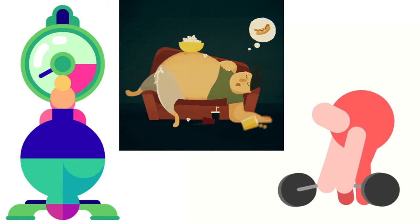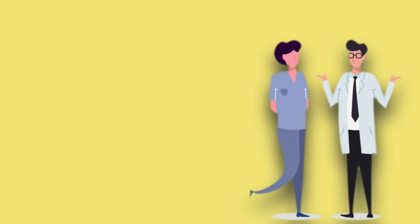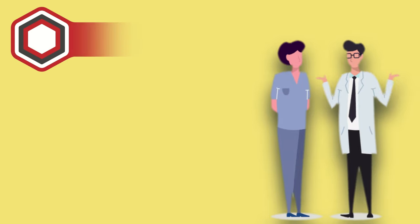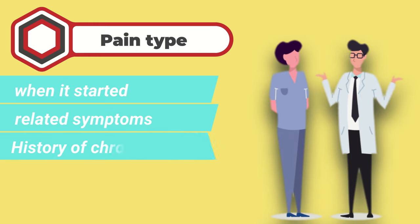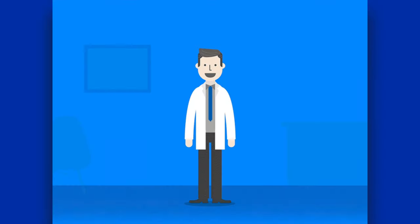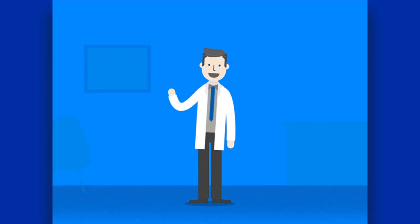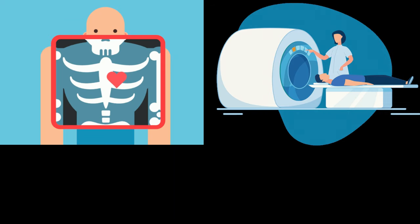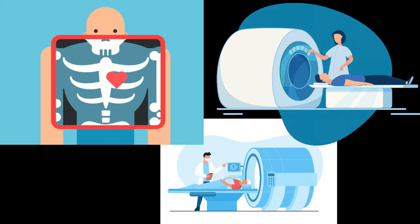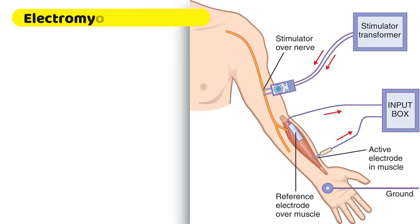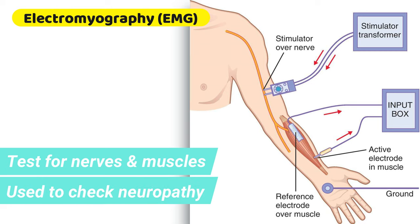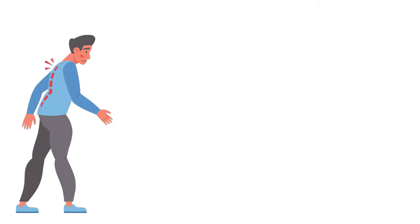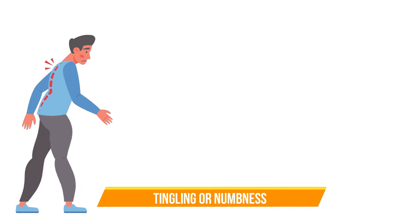Let's now see how lower back pain is diagnosed. To help your doctor diagnose the source of lower back pain, you should be specific in describing the type of pain you are experiencing — when it started, the related symptoms and any history of chronic conditions. Your doctor may also order investigations like X-ray, CT or MRI scans before starting treatment. Electromyography (EMG) is a test for nerves and muscles and may be used to check for neuropathy, that is any kind of nerve damage. If you have nerve damage, you might experience tingling or numbness in your legs.